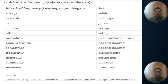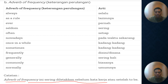Nah ini adverb of frequency — perulangan. Jadi kadang kita temukan dalam kalimat kata-kata seperti: always, as a rule, ever, seldom, often, nowadays, once in a while, sometimes, frequently, generally, commonly, normally. Catatannya: adverb of frequency sering diletakkan sebelum kata kerja atau setelah to be.